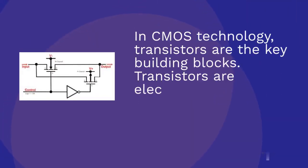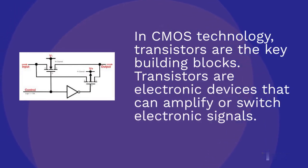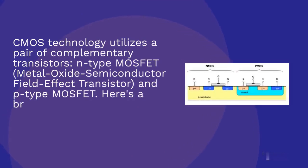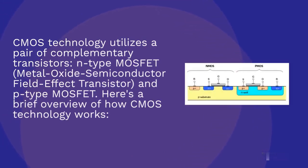In CMOS technology, transistors are the key building blocks. Transistors are electronic devices that can amplify or switch electronic signals. CMOS technology utilizes a pair of complementary transistors, N-type MOSFET and P-type MOSFET. Here's a brief overview of how CMOS technology works.